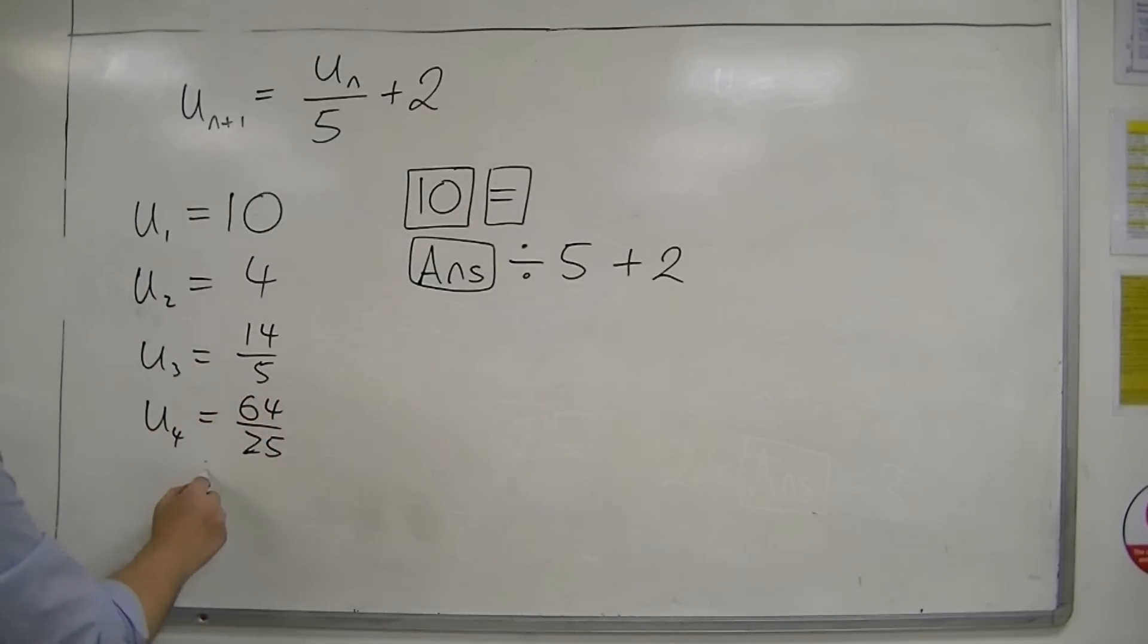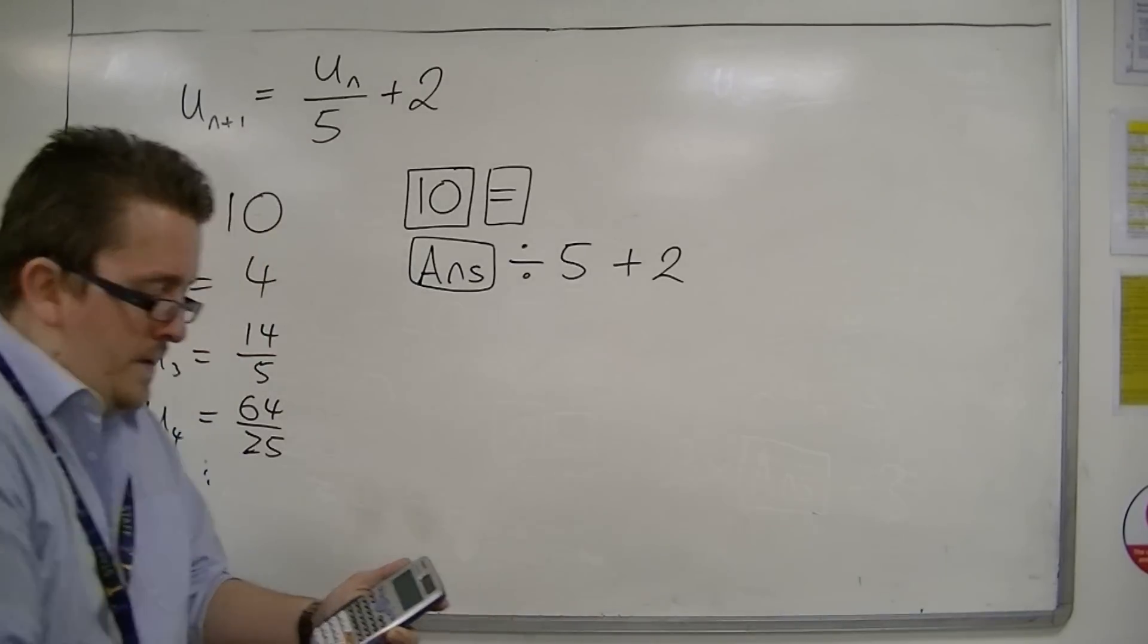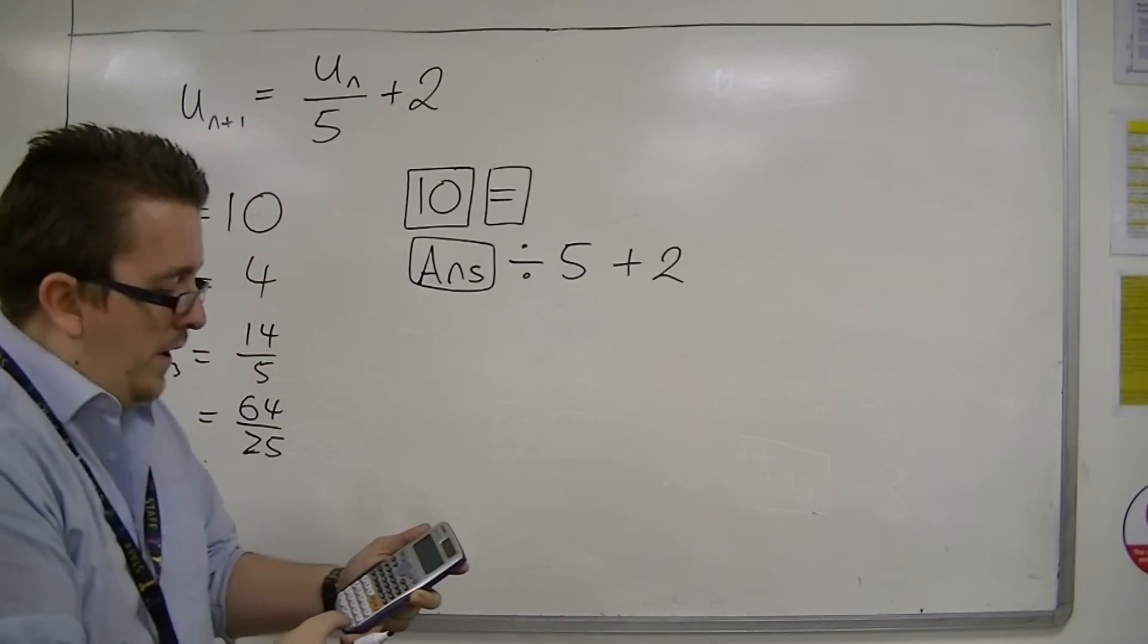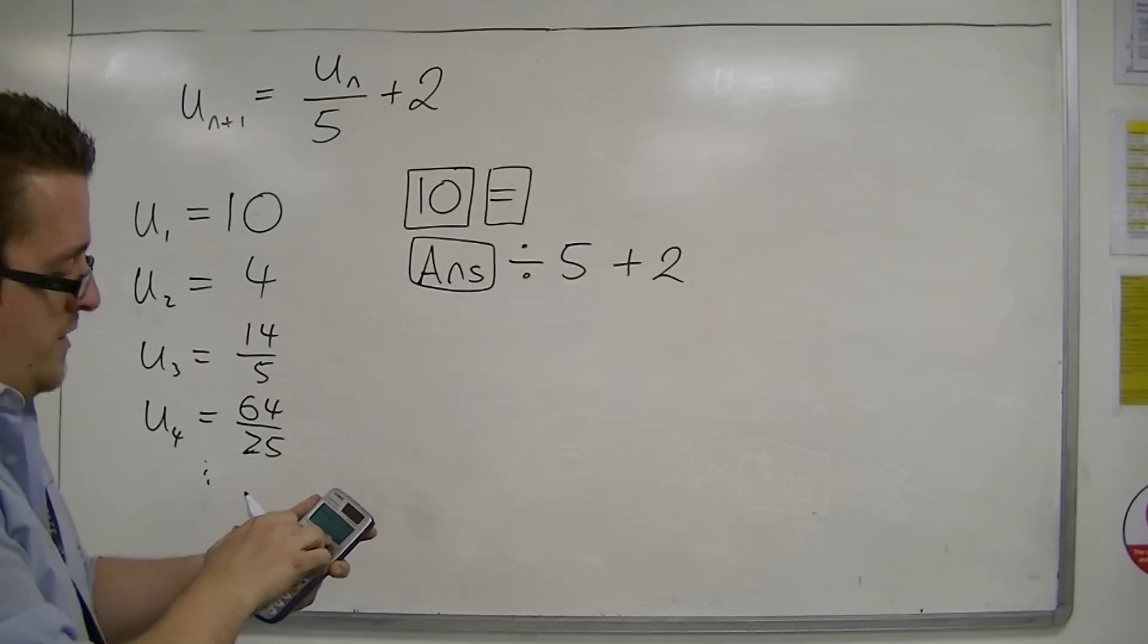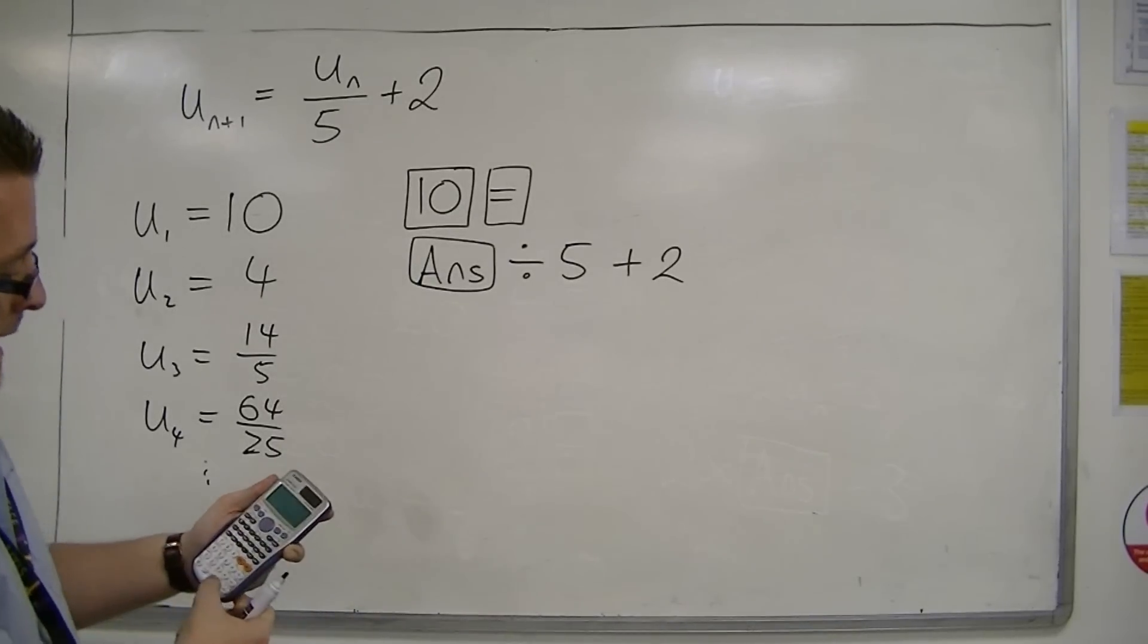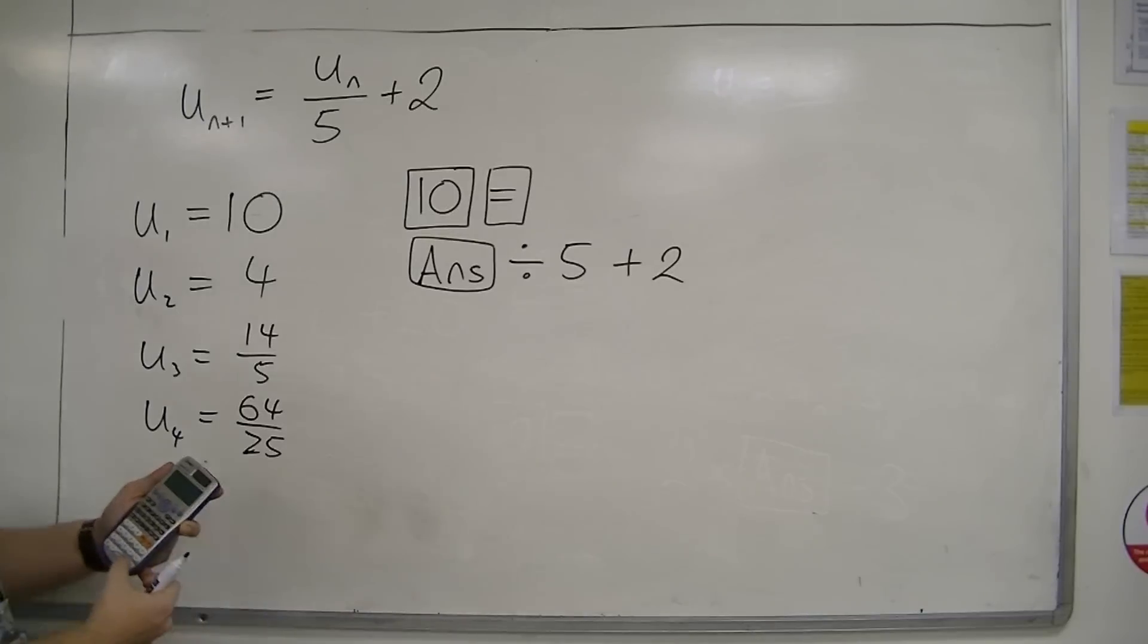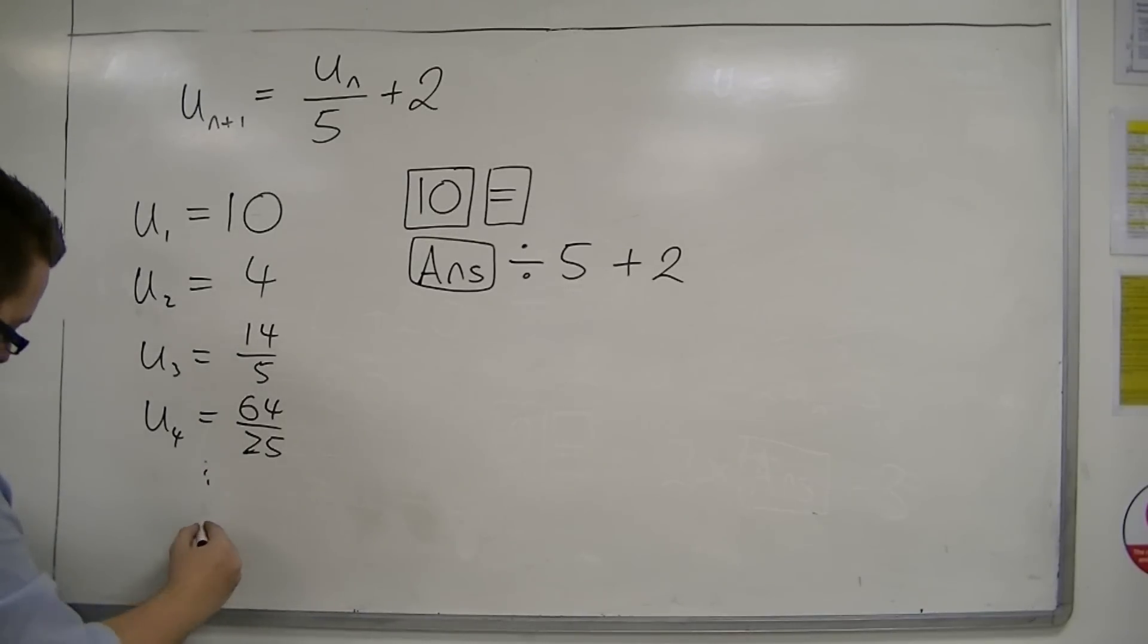Keep pressing equals, and you should find that I've gone a few times and now got to 2.5. Keep pressing equals and you can see that eventually it gets to an answer that is 5 halves, so 2.5. That's starting at 10.